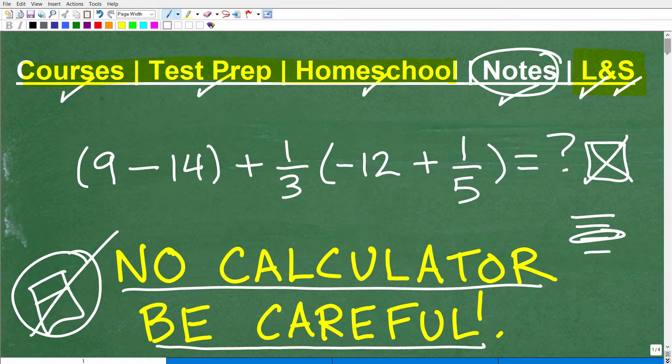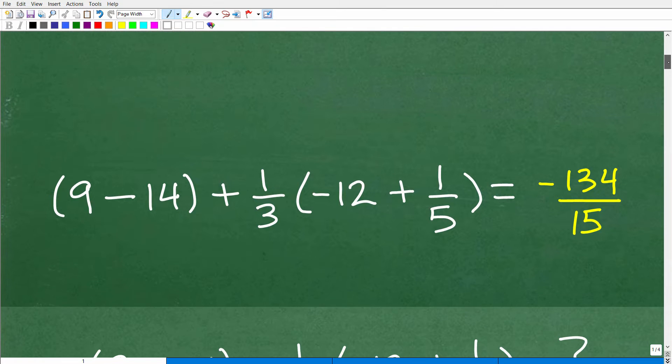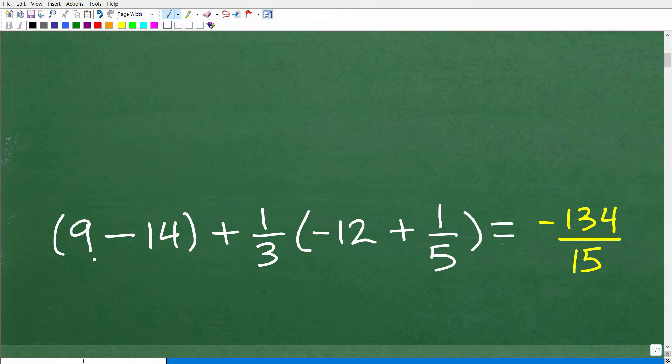Okay, so let's go ahead and take a look at the answer right now. And there you go. So we have (9-14) + 1/3 × (-12 + 1/5). This is equal to -134/15.